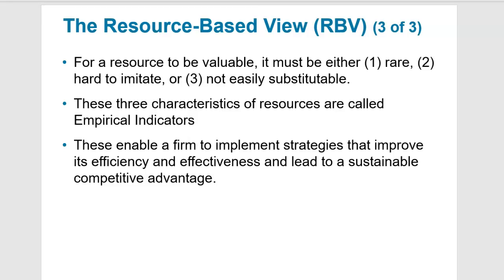Since tangible resources are more easily bought and sold, it's easier to put a value on them. But intangible assets are really what's more important for gaining a sustainable competitive advantage — they're the hardest for other companies to duplicate. For example, Warner Brothers has DC comics characters like Batman, Superman, and Wonder Woman that nobody else can use. For a resource to be considered valuable, it has to be rare, hard to imitate, and not easy to substitute.